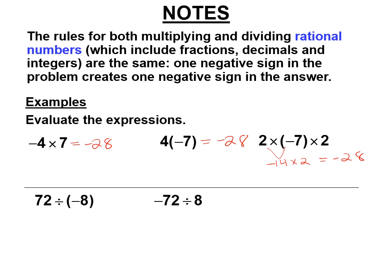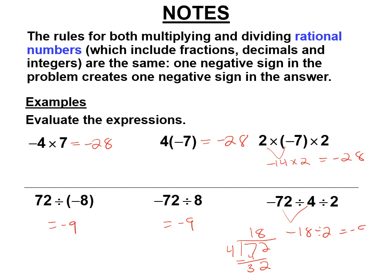Same rule for division: 72 divided by negative eight is negative nine. Negative 72 divided by eight is still negative nine. This one requires order of operations — you do negative 72 divided by four first. 72 divided by four: four goes into seven once with remainder three, and four goes into 32 eight times, so that's 18. This gives negative 18, and negative 18 divided by two is still negative nine. Notice if you do four divided by two first and get two, you get the wrong answer because of order of operations — that's a tie, and you have to do the one on the left.